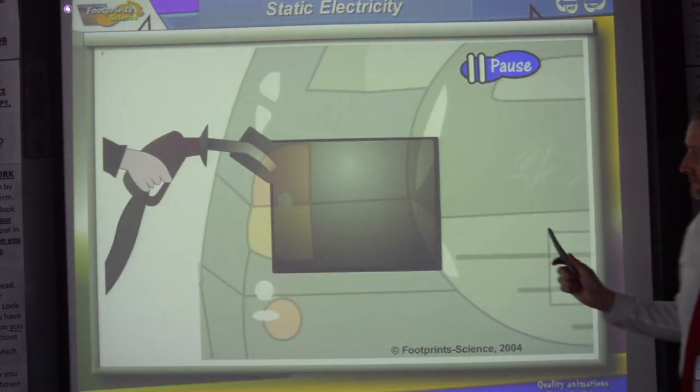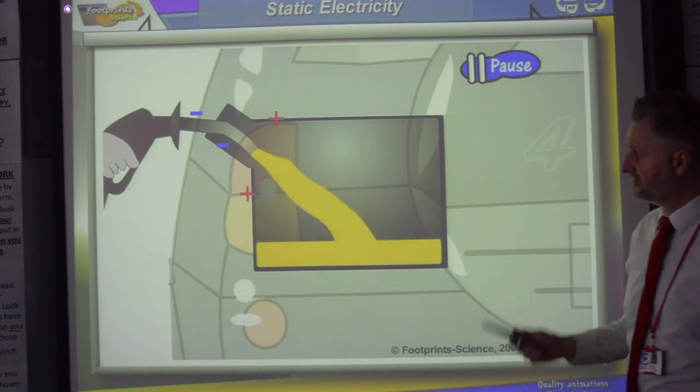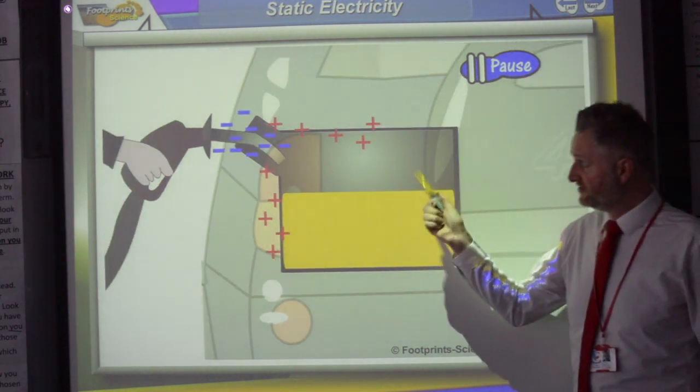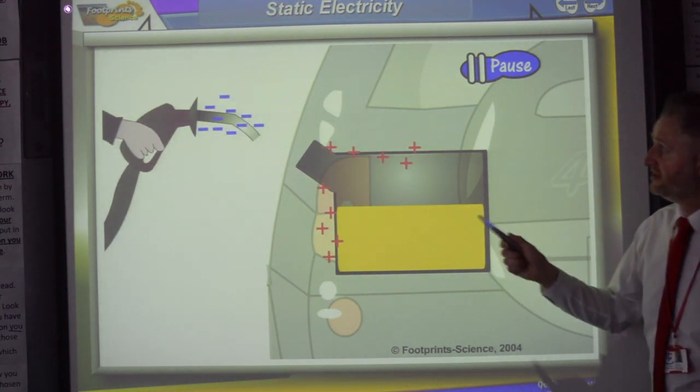Remember, as one thing rubs against another thing, it causes friction. And friction can cause electrons to be transferred. If enough electrons can be transferred, there could be a spark.